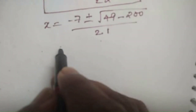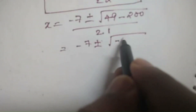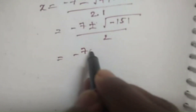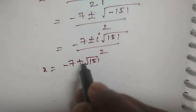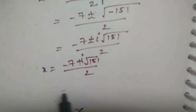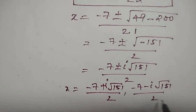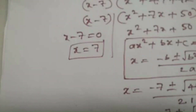This equals minus 7 plus or minus i times square root of 151, divided by 2. So the two complex values of x are: x equals minus 7 plus i times square root of 151, all divided by 2, and x equals minus 7 minus i times square root of 151, divided by 2. So these are the three total values of x.